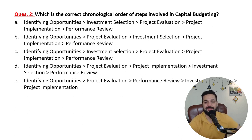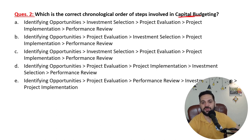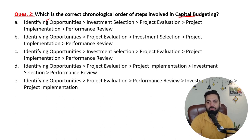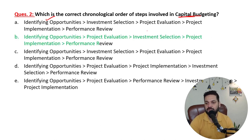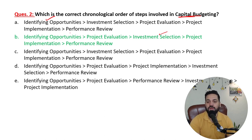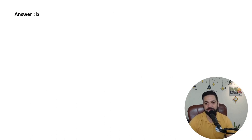Which is the correct chronological order of steps involved in capital budgeting? It starts with identifying the opportunity first, then you evaluate the project, then investment selection, project implementation, and then the performance review. So selection happens after evaluation — please remember that.